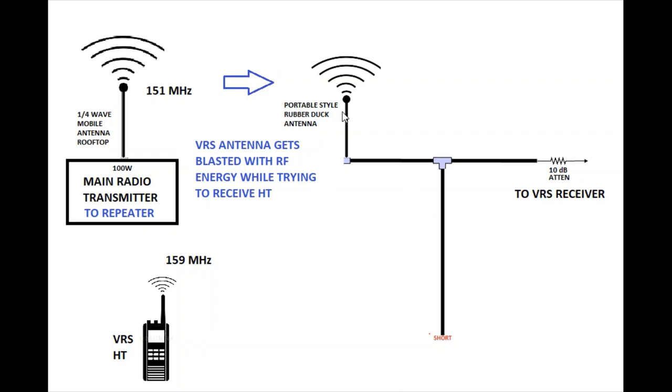We have a situation where we have our VRS antenna here and it needs to receive two signals, or actually it only needs to receive one signal from the portable, but it's going to receive the second signal which is coming from the main radio. One of the signals, the main radio signal, it needs to get rid of, it needs to filter out, because the receiver does not want to get bombarded by this very large signal.